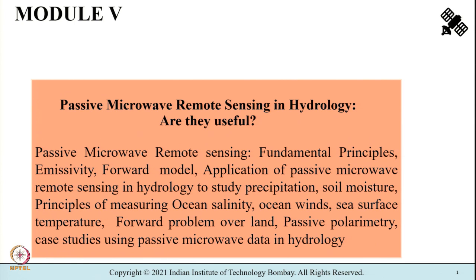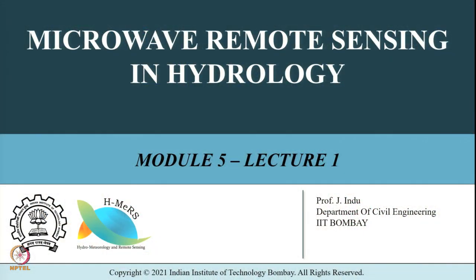As part of this module we will learn the fundamental principles of passive microwave remote sensing, what is a forward model, what is emissivity, and the principles of measuring ocean salinity, ocean winds, sea surface temperature. We will also understand how passive radiometers can help in measuring precipitation and soil moisture through case studies, and we shall cover the forward problem over land and passive polarimetry.